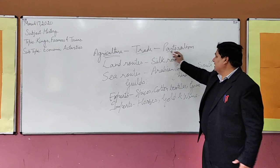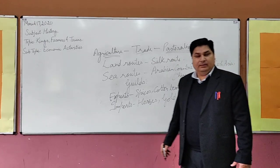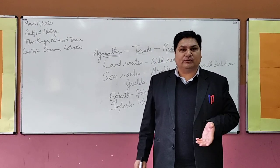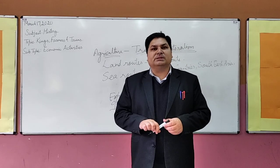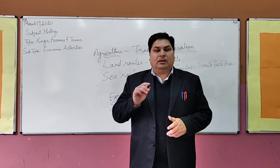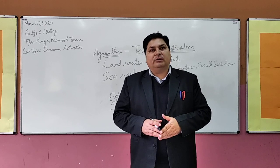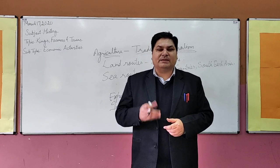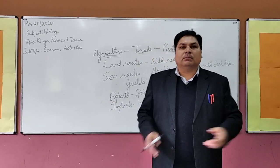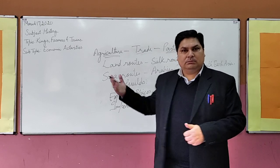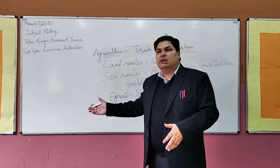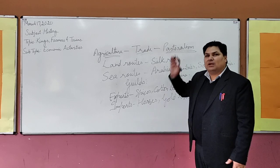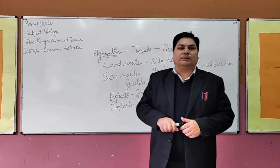The last economic activity was Pastoralism. Pastoralism in this period covered rearing cattle like cows and buffaloes, and smaller animals like goats and sheep. These animals were reared for their milk products, wool, and other animal products. Pastoralists have not left many written records, so not much is known about their social or economic lives.